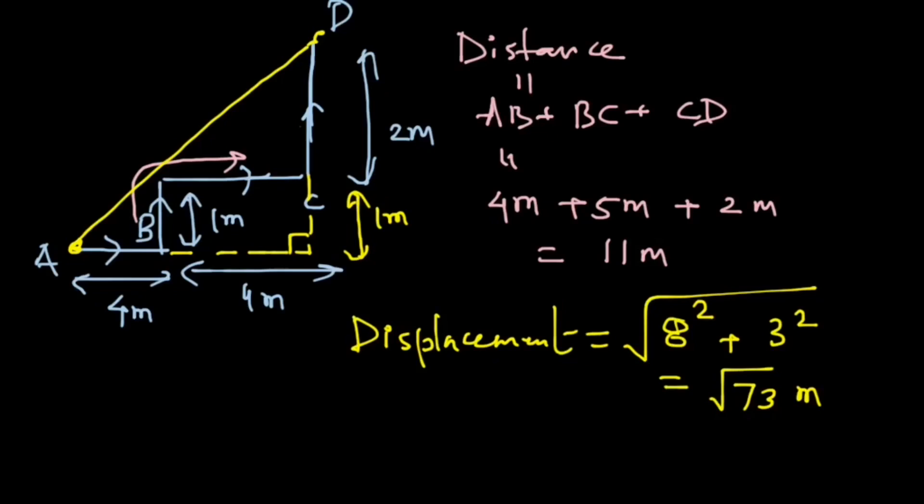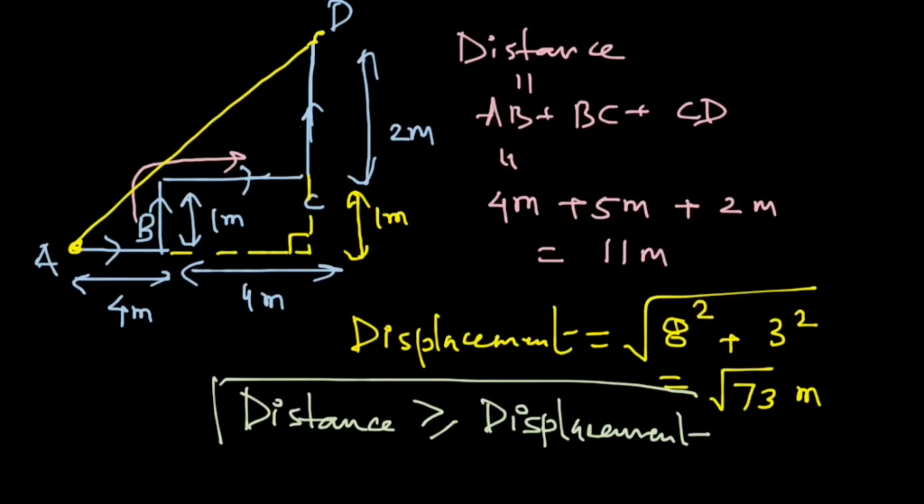One thing that you should note is in all of our examples that we have taken so far, the thing that stands out is that distance is always greater than or equal to displacement. So please remember this rule: distance will always come out to be equal to the displacement or greater than that. The case of equal to is when the motion is on a straight line in the same direction.